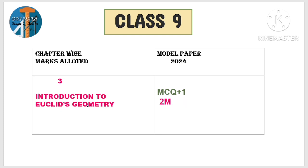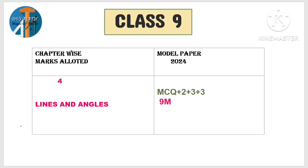Coming to the third lesson: Introduction to Euclid Geometry. You will learn line, segment, radius, points. MCQ 1 mark, 2 out of 2 — easy lesson. Next, fourth lesson: lines and angles. Any problems on lines and angles properties and transversal properties. MCQ, 2 marks — 2 questions, 3 marks — 2 questions. 9 marks total — second highest. First is polynomials with 11 marks, then lines and angles with 9 marks.